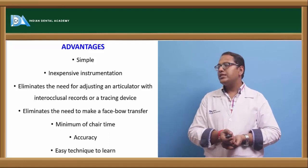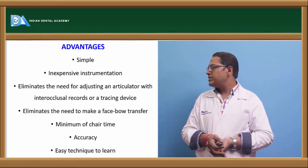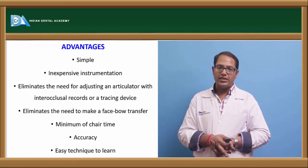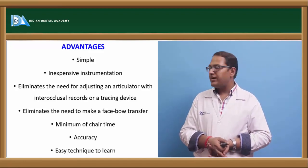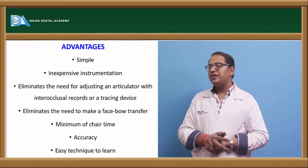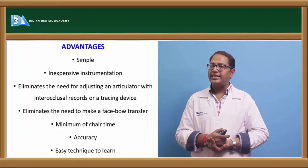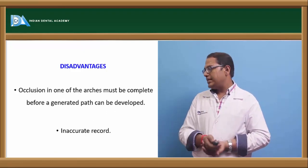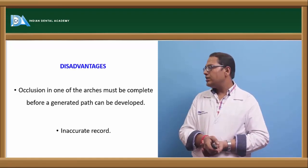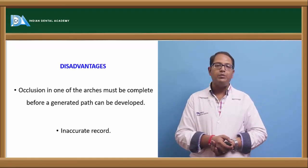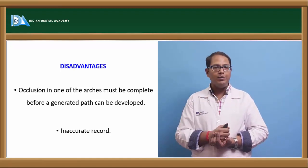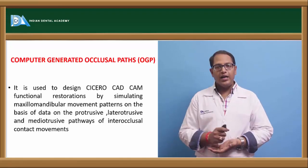Coming to the advantages again: it is simple and uses inexpensive instrumentation; it eliminates the need of adjusting an articulator with inter-occlusal record or a tracing device, though a verticulator is required; it eliminates the need of a face bow; and chair-side time is reduced with an easy technique. The disadvantage is that it is an inaccurate method, and occlusion in one arch must be complete before generating the path — meaning the mandibular occlusion should be complete and only the maxillary should remain.